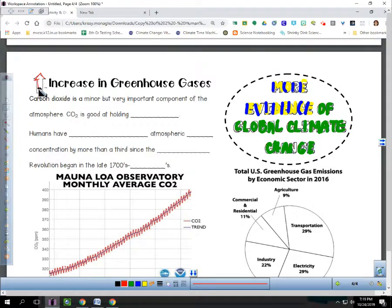An indicator of climate change is that increase in greenhouse gases. Carbon dioxide is a minor but very important component of the atmosphere. CO2 is really good at holding heat because it's one of those greenhouse gases. And humans have increased atmospheric CO2 concentration by more than a third since the Industrial Revolution, which began in the late 1700s to early 1800s.